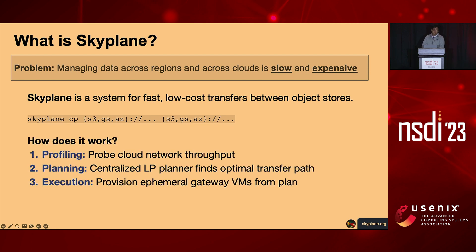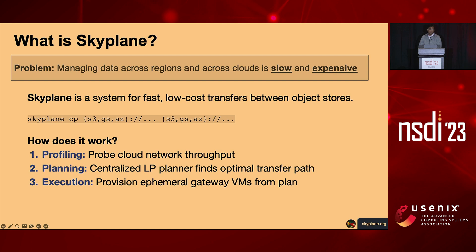At a high level, Skyplane works by first profiling cloud networks. We periodically probe cloud network throughput to understand how clouds engineer traffic, route it, and where they apply points of throttling or congestion. Second, we use centralized ILP-based planning to find the optimal transfer path. Given this profile—which we find is remarkably stable—we do centralized planning to find the optimal transfer plan at maximum throughput and minimum cost. Lastly, we execute this topology by provisioning ephemeral gateway VMs from this plan, all wrapped into a seamless CLI tool.